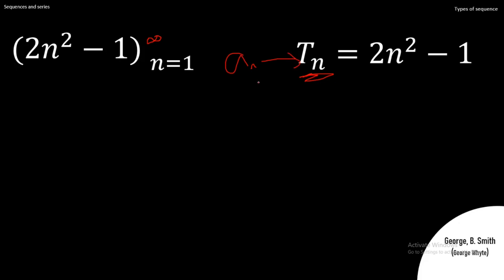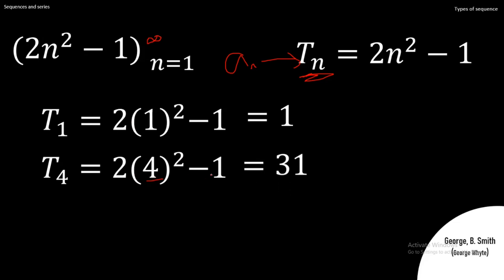Now, if you're asked to find the first term, all you're meant to do is in place of n, put 1. So T₁, you put 1, simplify that—your result becomes 1. In this case, that's a coincidence. If you want to find the fourth term, in place of n you put 4. Four squared will give us 16, 16 times 2 is 32, 32 minus 1—that will give us 31.